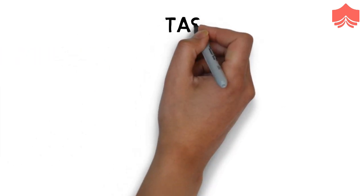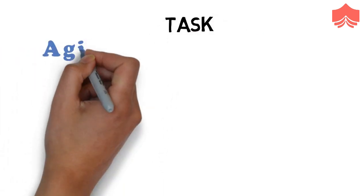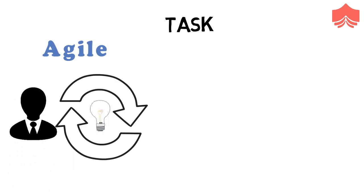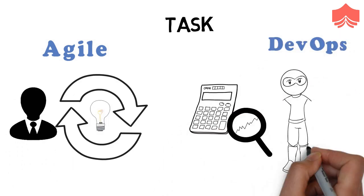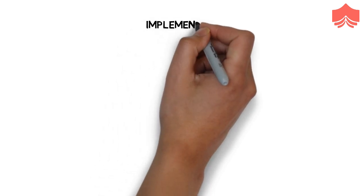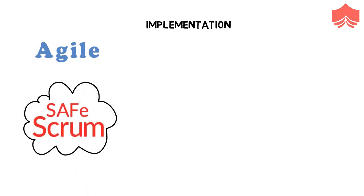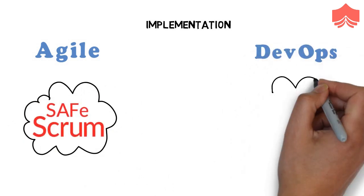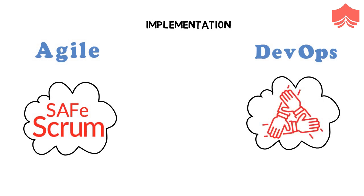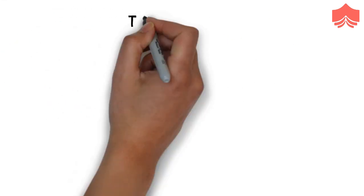Task. Agile process focuses on constant changes. DevOps focuses on constant testing and delivery. Implementation. Agile method can be implemented within a range of tactical frameworks like SAFe and Scrum. The primary goal of DevOps is to focus on collaboration, so it doesn't have any commonly accepted framework.